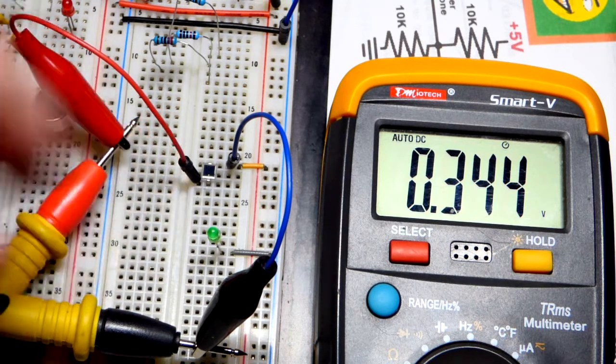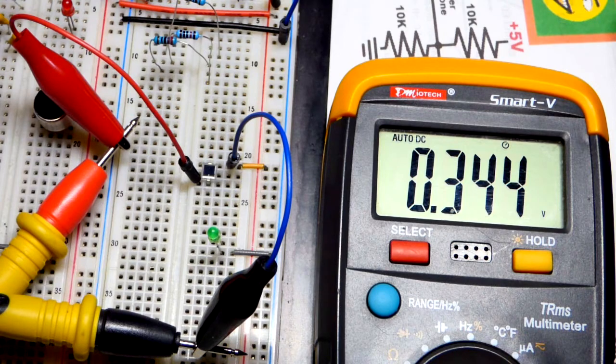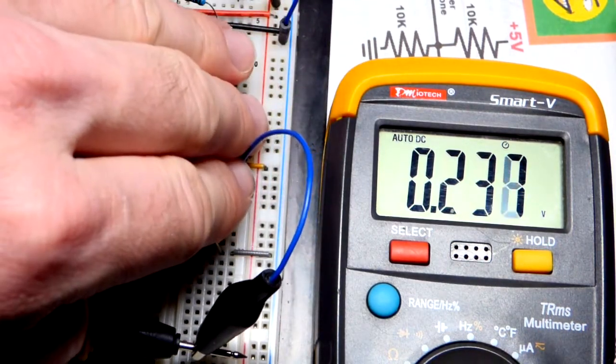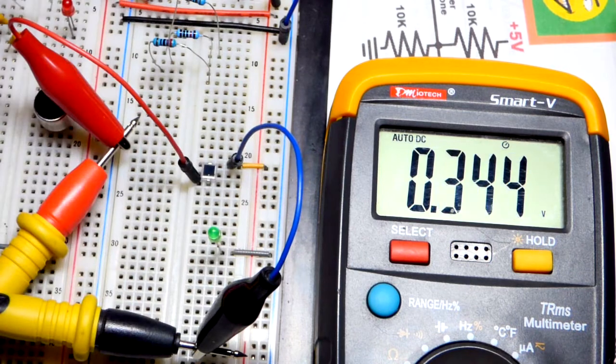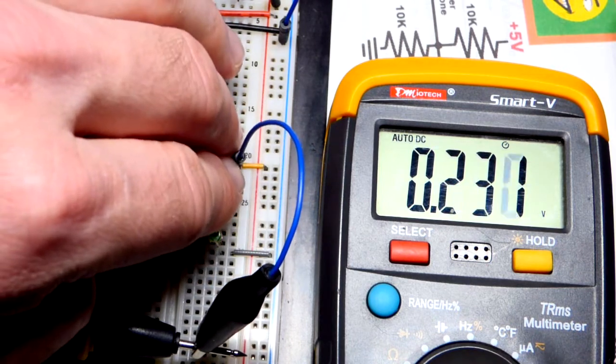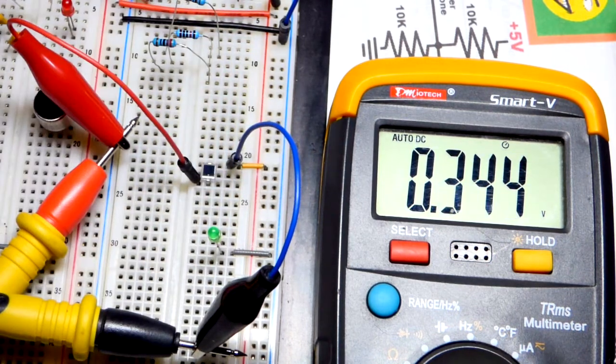But it can be used kind of like a mini solar cell. Maybe you want to look at this voltage for determining how bright it is or something. But it doesn't look near as effective as the voltage divider.